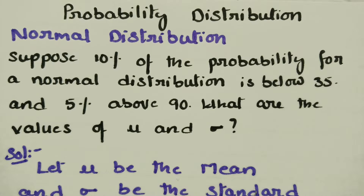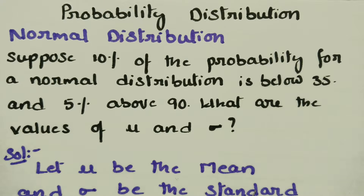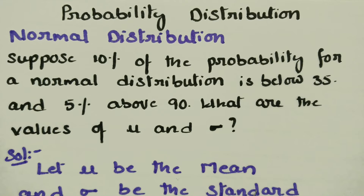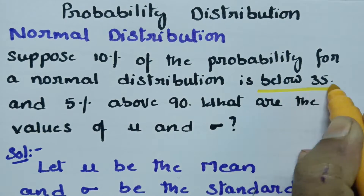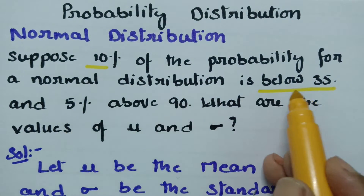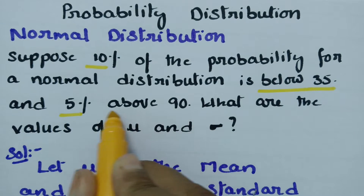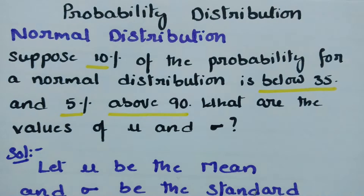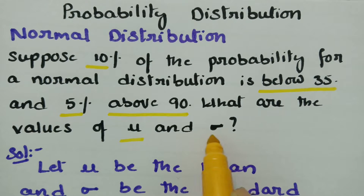This video is on normal distribution. In today's video, I am going to explain the problem. Suppose 10% of the probability for the normal distribution is below 35, and 5% of the probability is above 90. What are the values of mu and sigma?